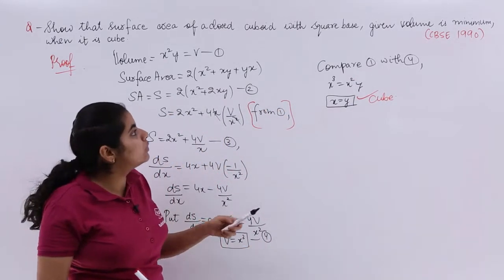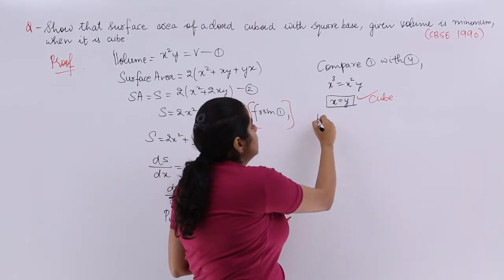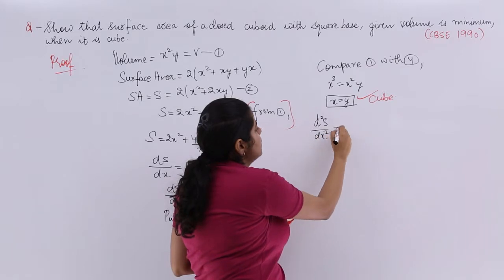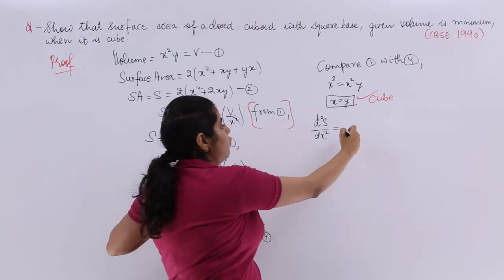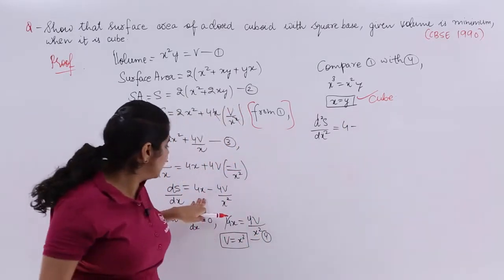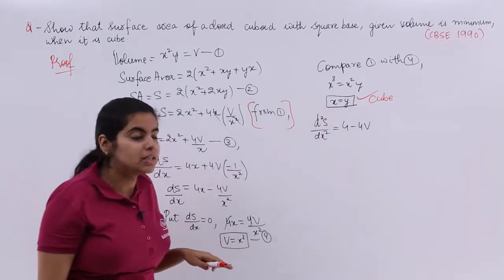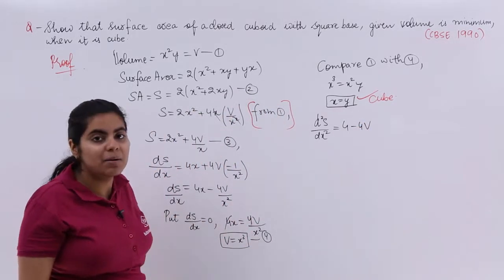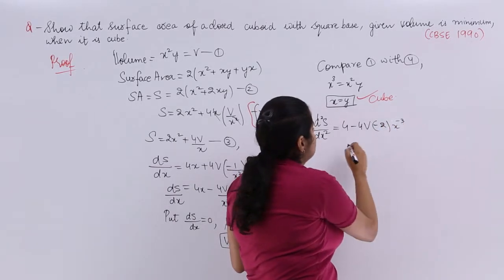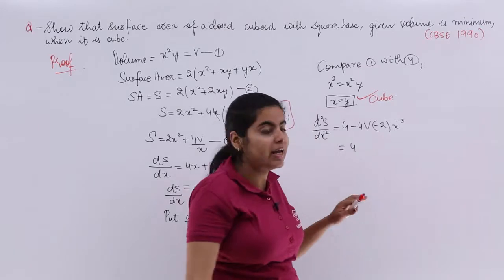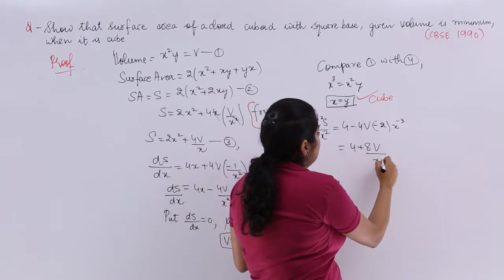But have I proved about given volume minimum? No. For given volume minimum I need to differentiate second time DS by DX. So it becomes D2S by DX square. Where is DS by DX? It is here. So it is 4 from here minus 4V is there. What is the differentiation of X raised to the power minus 2? It is nothing but minus 2 X raised to the power minus 3 which is equal to 4. And 4 times 2 makes it 8V upon X cube.